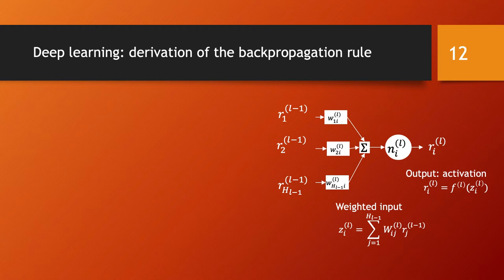Then you are looking at the error — the difference between the predicted label and the real label of those data points. There are three different strategies: online learning, where for each data point you collect the error right away and update your weights; batch learning, where you collect the error over all data points and update the weights at the end; or mini-batch learning, where you split your data points into several subsets and after each subset you take the combined error and update the weights.